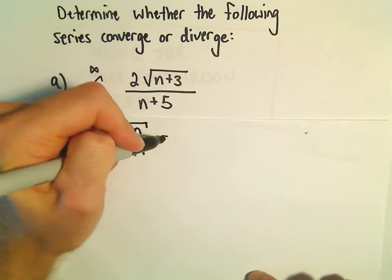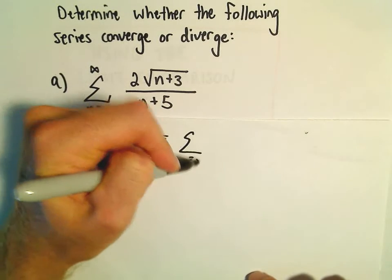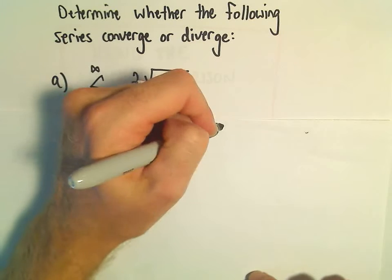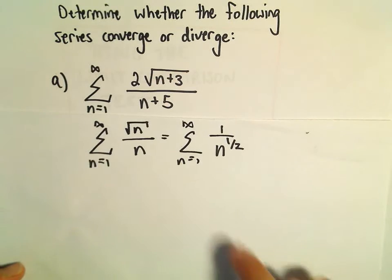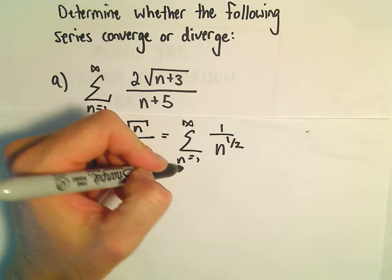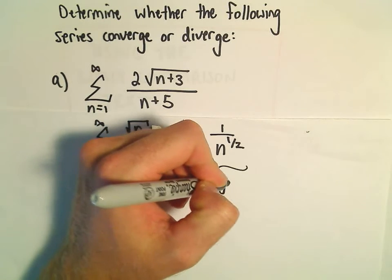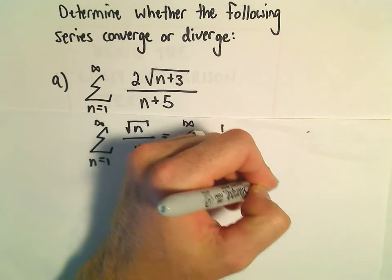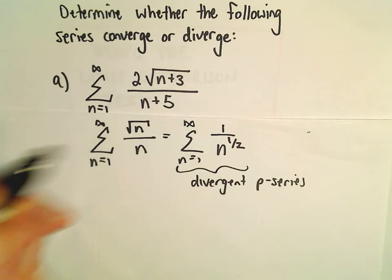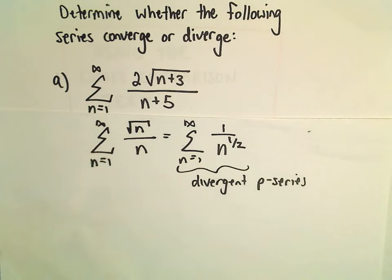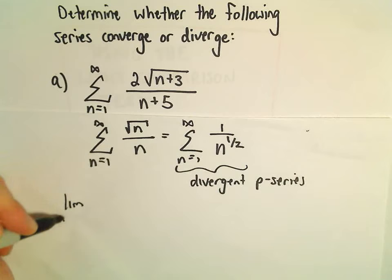So if we simplify this, this is n to the 1 half over n to the first. If we subtract exponents, we'll just be left with 1 over n to the 1 half. And recall, this is going to be a divergent p-series because our power is less than or equal to 1.